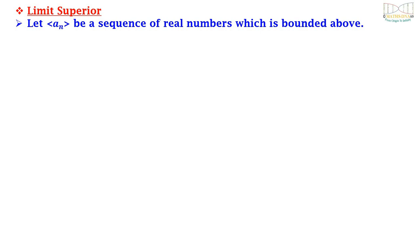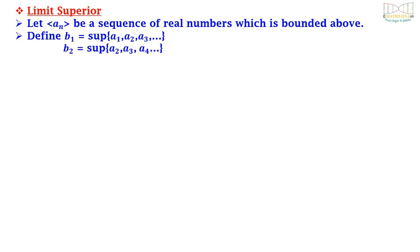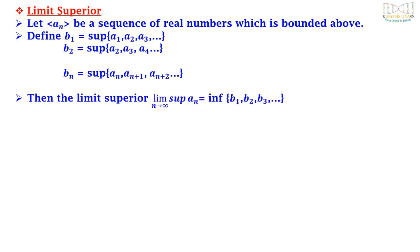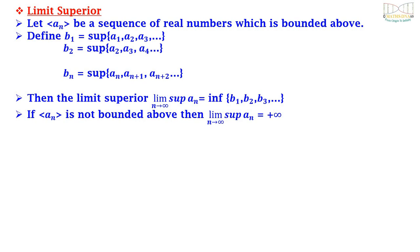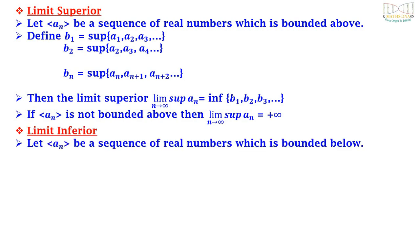Limit superior: let {a_n} be a sequence of real numbers which is bounded above. Define b1 = sup{a1, a2, a3, ...}, b2 = sup{a2, a3, a4, ...}, and b_n = sup{a_n, a_{n+1}, a_{n+2}, ...}. Then lim sup_{n→∞} a_n = inf{b1, b2, b3, ...}. If {a_n} is not bounded above, then lim sup_{n→∞} a_n = +∞.